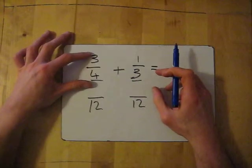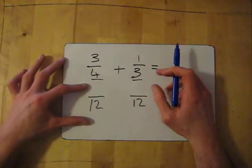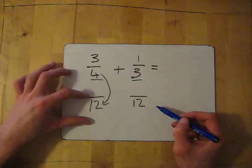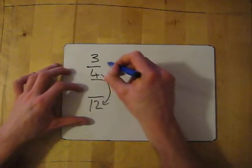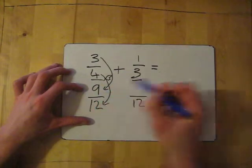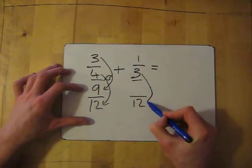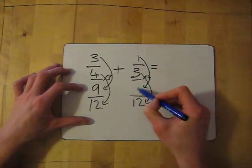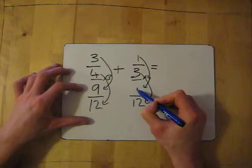Now we're going to convert both of these fractions. So they'll become equivalent fractions here. So what have I done to get from 4 to 12? I've timesed it by 3, so I have to times the top by 3 as well. So that gives me 9. What have I done to get from 3 to 12? I've timesed it by 4 this time. So I have to times the top by 4, which gives me 4.